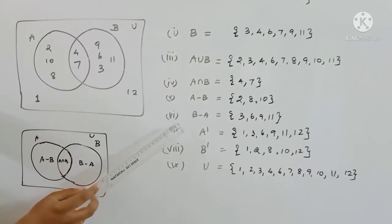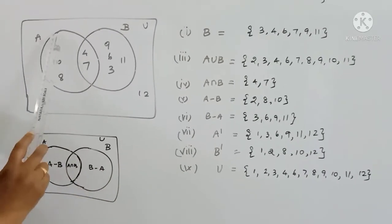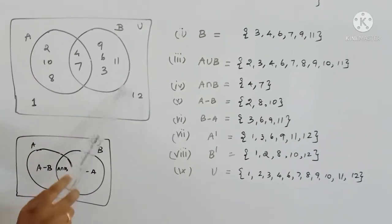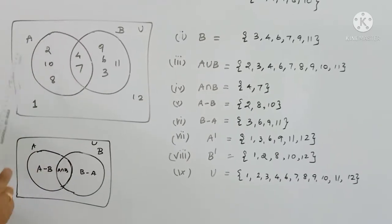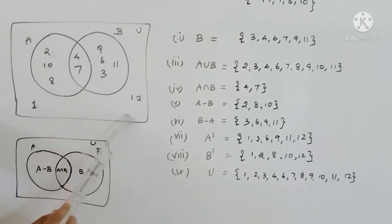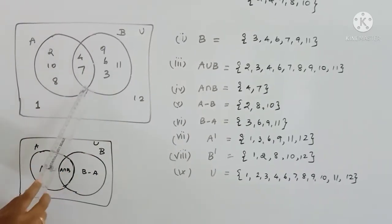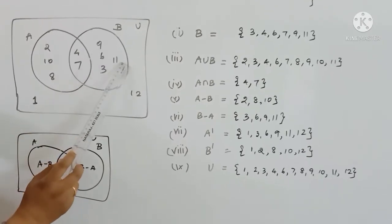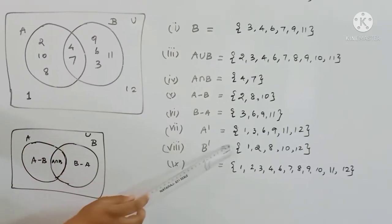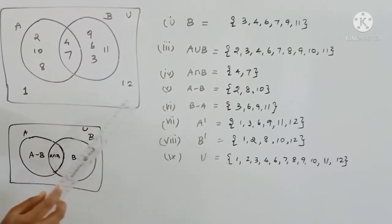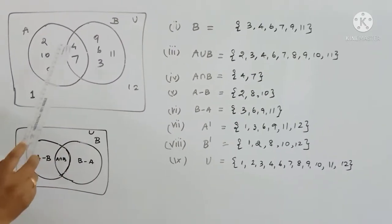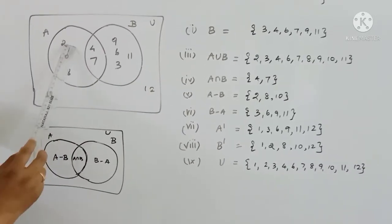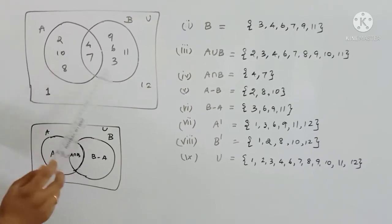A complement (A dash) — elements not in A. B complement (B dash) — elements not in B: 1, 3, 6, 9, 11, 12 for A dash, and 2, 8, 10, 12 for B dash.